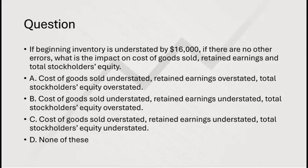Let's try this: if beginning inventory is understated by $16,000, and there are no other errors, what's the impact on cost of goods sold, retained earnings, and total stockholders' equity? Beginning inventory has a direct relationship with cost of goods sold — as beginning inventory goes, so goes cost of goods sold. So if beginning inventory is understated by $16,000, cost of goods sold is also understated by $16,000. Gross profit would then be overstated by $16,000, meaning net income, retained earnings, and total stockholders' equity are all overstated by $16,000.